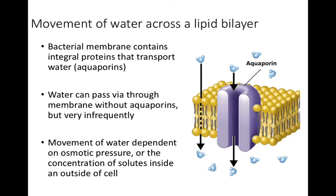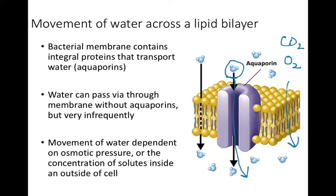Some molecules can move through the phospholipid bilayer simply by diffusion. Molecules that can do this are typically small, nonpolar, or hydrophobic — examples include the gases CO2 and O2. However, other molecules can't pass through because they're charged, polar, or large and bulky, requiring transport proteins. One example is aquaporin, which allows the movement of water by passive transport in the direction of water pressure — in other words, the movement of water through aquaporin is dependent on osmosis, moving from areas of low solute concentration to high solute concentration.